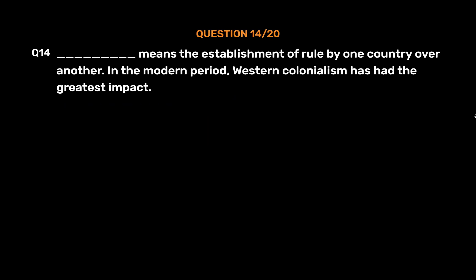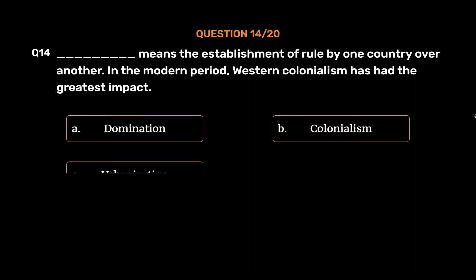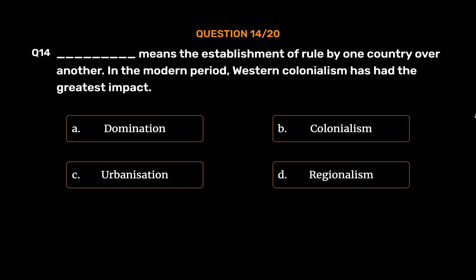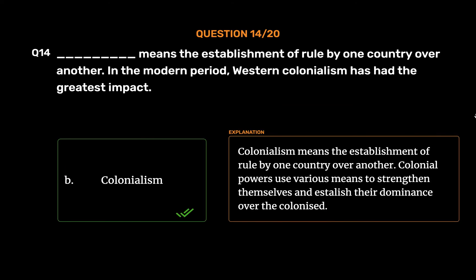Question 14: _____ means the establishment of rule by one country over another. In the modern period, Western colonialism has had the greatest impact. Options: A. Domination, B. Colonialism, C. Urbanization, D. Regionalism. The correct answer is Option B: Colonialism. Colonial powers use various means to strengthen themselves and establish their dominance over the colonized.